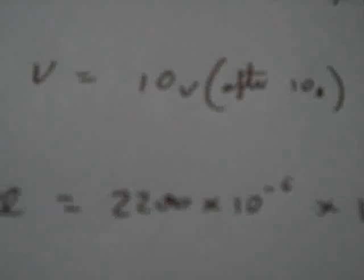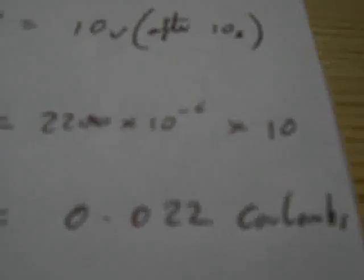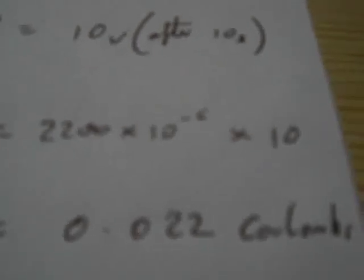And Q equals 2200 times 10 to the minus 6, that's the value of the capacitor, times the voltage after 10 seconds, which is 10 volts. And that gives us a total calculated value of charge in the capacitor of 0.022 Coulombs. So, again, we can see the charge output is 0.22, the charge input is 1 Coulomb. So, again, we're not close to over unity. Not even terribly efficient.